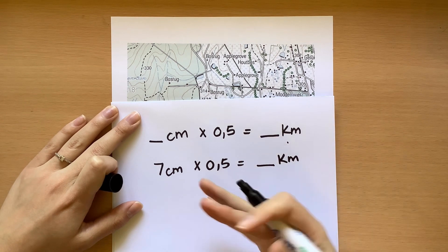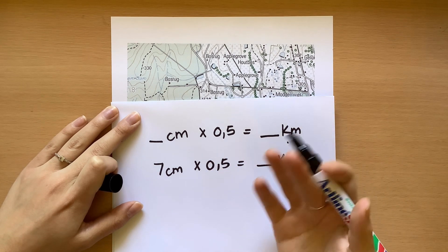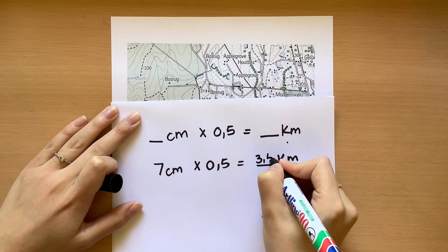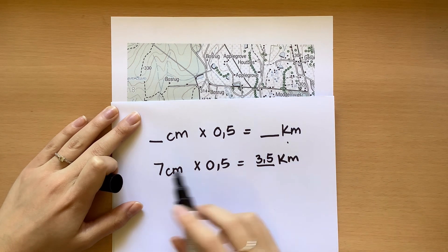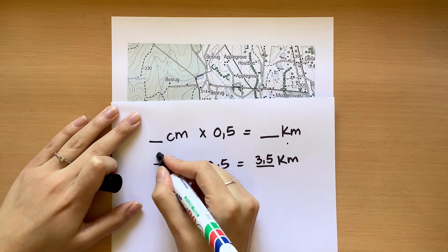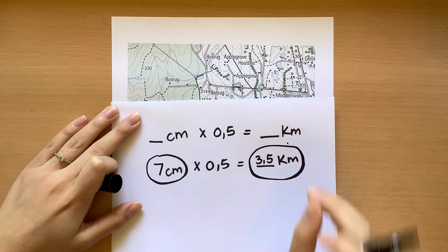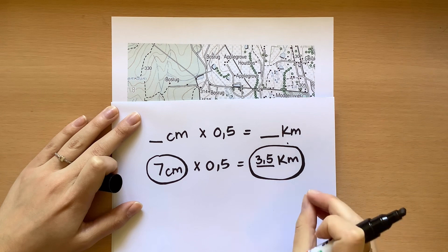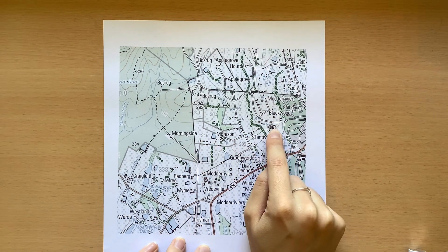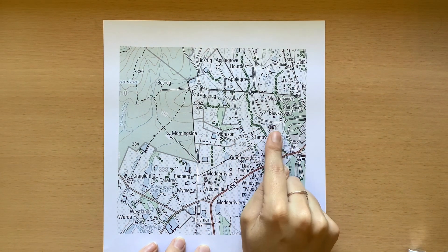Our formula is: something centimeters times 0.5 gives us something kilometers. We want our answer in kilometers because if we used centimeters we would get thousands of centimeters, which we wouldn't use in real life. So we put in our measurement of seven centimeters times 0.5. Since 0.5 is half, what is half of seven? The answer is 3.5 kilometers — or you can say 7 divided by 2, because dividing by 2 means half. So this 7 centimeters is what we measured on the map, and 3.5 kilometers is what the distance would be in real life. Even though we measured 7 centimeters on the map, if you walked from that place to that place it would be 3.5 kilometers.